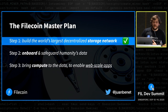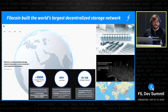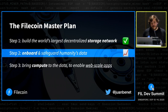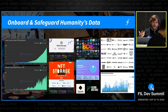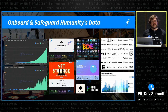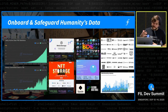Last year we started framing three big work streams as three steps in a broader master plan. Step one: build the world's largest decentralized storage network. We've basically accomplished that by building a massive 10-exabyte-scale network. Step two: onboard and safeguard humanity's data onto that network. We've been scaling data onboarding with an enormous amount of effort — lots of on-ramps, storage providers, clients, and conversations bringing super valuable data into the network. We also want to make this retrievable — we've made progress but it's still a long road. Step three: bring compute to the data.